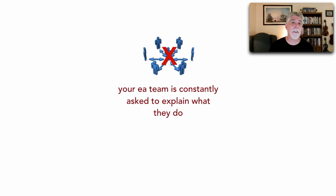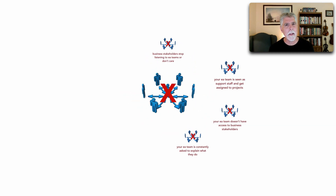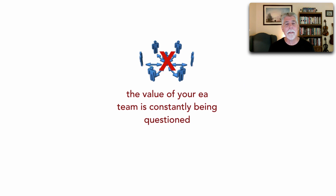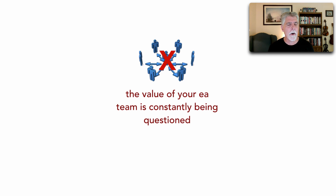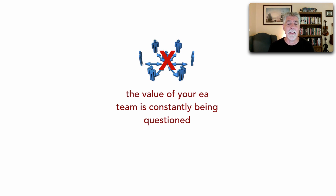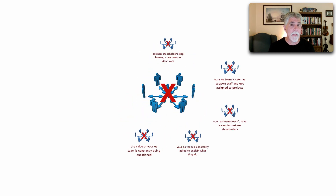Another warning sign is that your enterprise architecture team is constantly asked to explain what you do and why you're there. Related to that, the value of your enterprise architecture team is constantly being questioned, and every time budget cuts come up the EA team is targeted. This is the fault of enterprise architects not appropriately communicating their value.